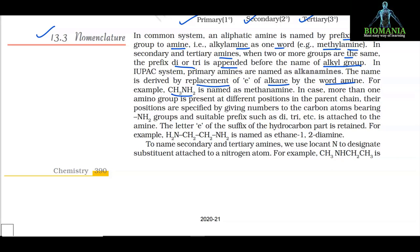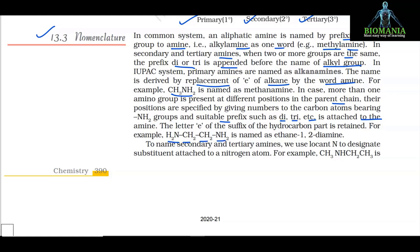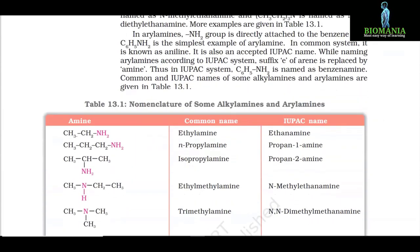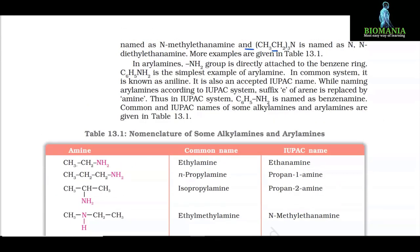When more than one amino group is present at different positions in the parent chain, their positions are specified by giving numbers to the carbon atoms bearing NH2 groups, and a suitable prefix such as di- or tri- is attached. The letter 'e' of the suffix of the hydrocarbon part is retained. For example, NH2CH2CH2NH2 is named as ethane-1,2-diamine. To name secondary and tertiary amines, we use the locant N to designate substituents attached to the nitrogen atom. For example, CH3NHCH2CH3 is named as N-methylethanamine.